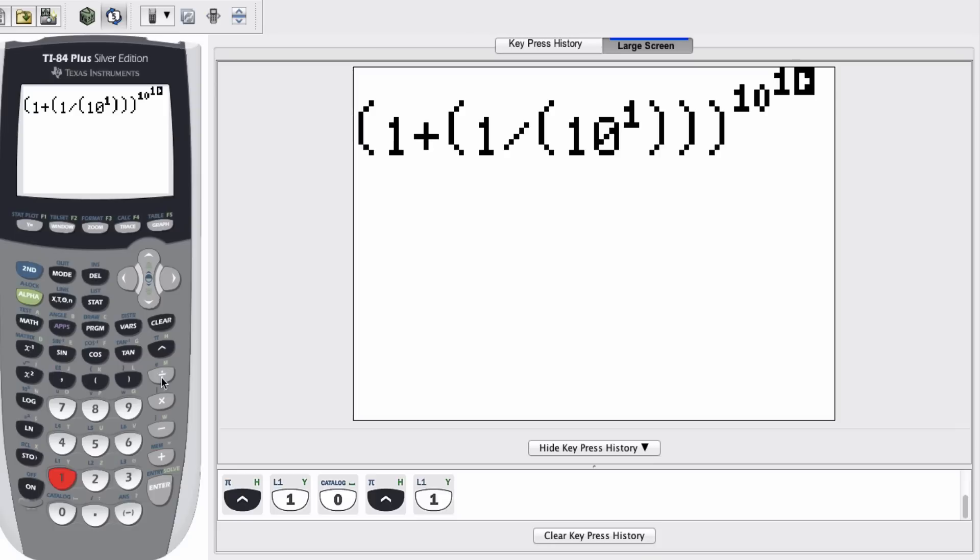So now I'm going to take this to the 10 to the first power. And if you happen to have a calculator that does not put things up in exponents like mine, and it shows the caret instead, you need to be diligent of closing the parenthesis after the exponent as well. So when we press enter, I should get this answer of 2.593, blah, blah, blah. And that's already in there for you.